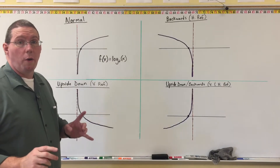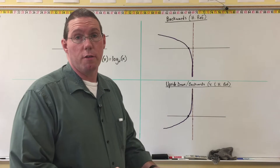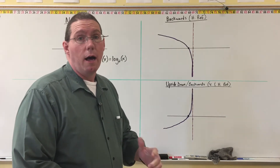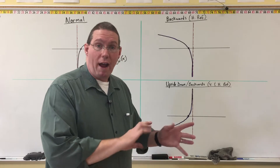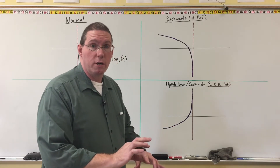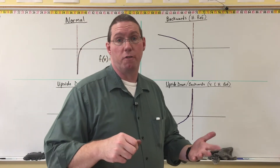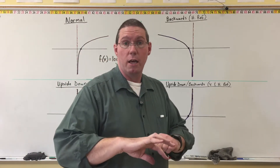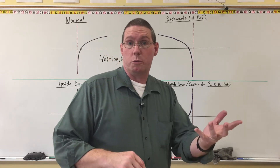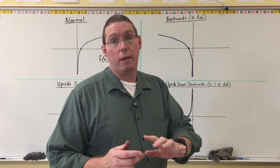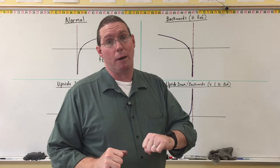Alright, so just like when we learned about the graphs of exponential functions recently — after we learned how to identify the base of the graph of the exponential function — we then learned about reflections. We learned how the exponential function can be reflected vertically, which we call upside down. It can be reflected horizontally, which we call backwards, or it could be reflected both vertically and horizontally, and we call that upside down and backwards.